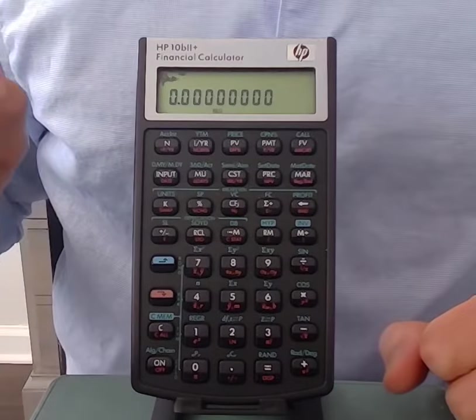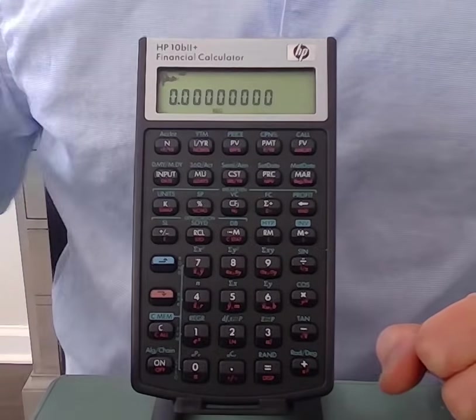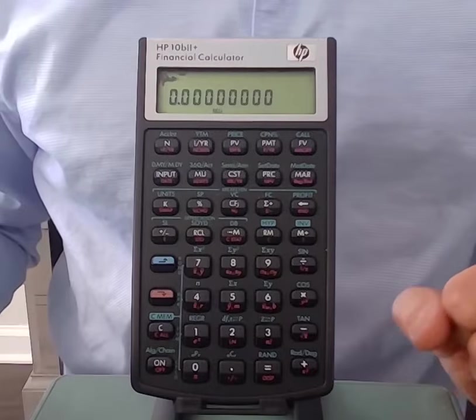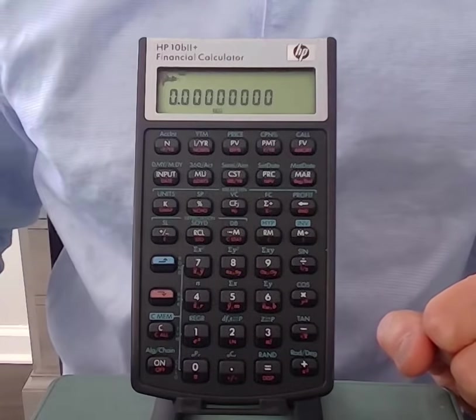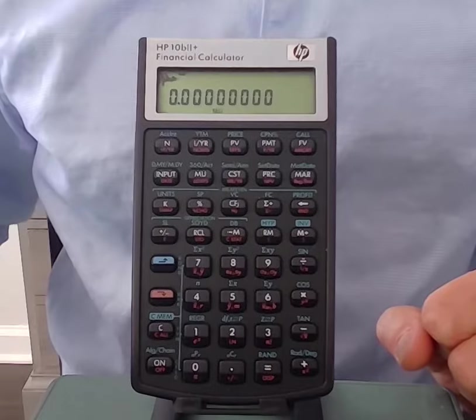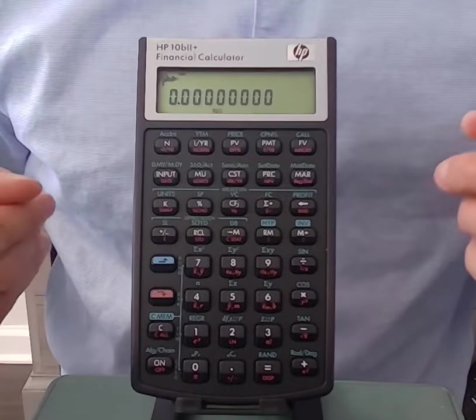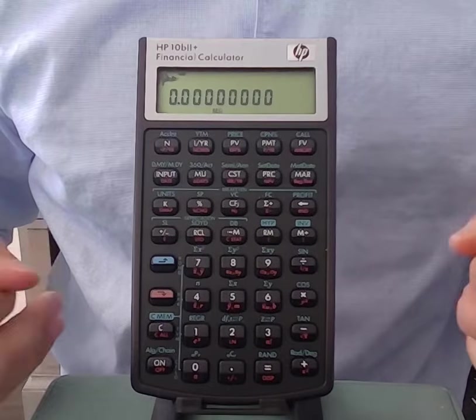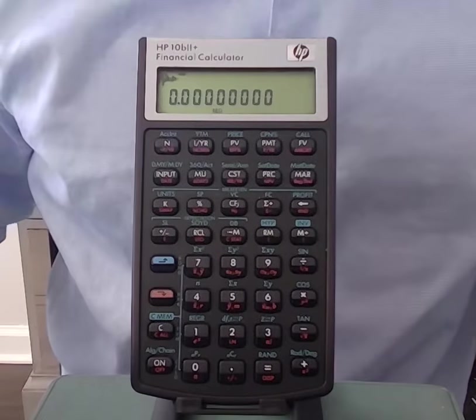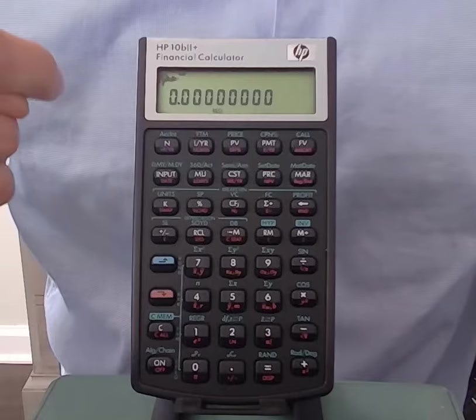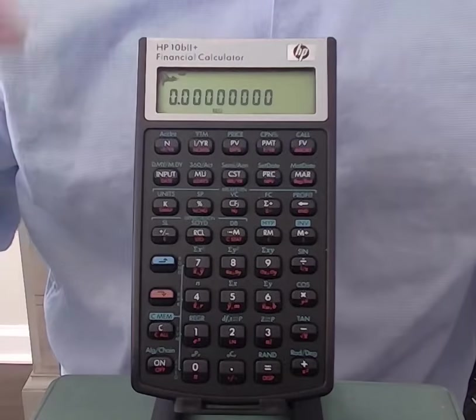This would indicate that it will interpret everything we put into the calculator as occurring at the beginning of a period, as opposed to the end. But we almost always assume that cash flows occur at the ends of periods. So we want this BEG letters to go away so that it's set to end.